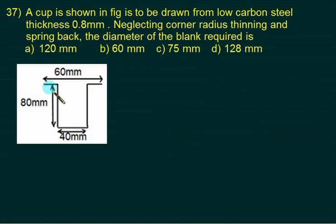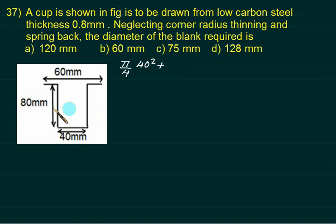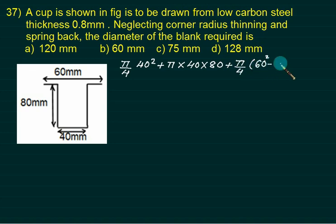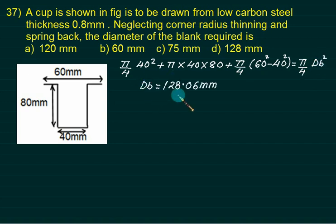Another example: a flanged cup with a vertical wall, bottom circular surface, inner diameter 40 mm, outer flange diameter 60 mm, height 80 mm, thickness 0.8 mm (neglecting corner radius and thinning). Material required: bottom = (π/4)·40², wall = π·40·80, flange (hollow disc) = (π/4)·(60²−40²). Setting total area equal to (π/4)·Db² and solving gives a blank diameter of 128.06 mm.